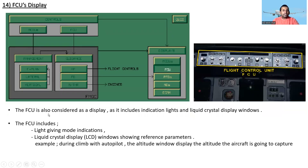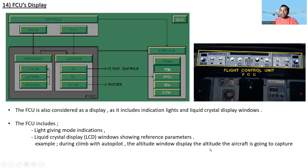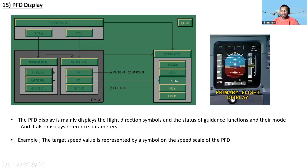The Flight Control Unit can also be considered as a display, as it includes indication lights and liquid crystal display windows. The FCU includes lights giving mode indications and LCD windows showing reference parameters. For example, during climb with autopilot, the altitude window displays the altitude the aircraft is going to capture.